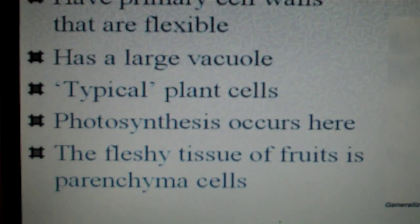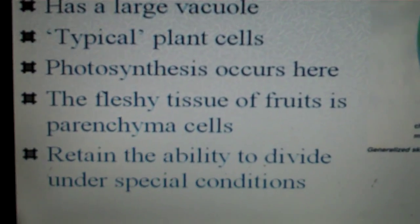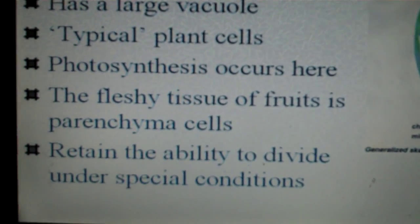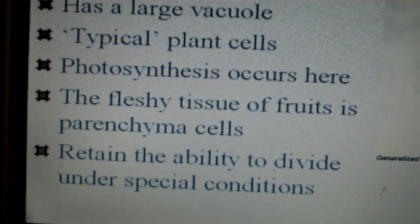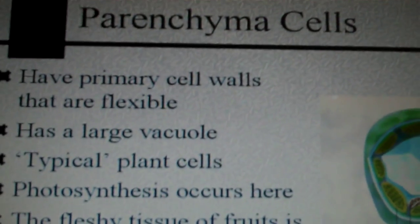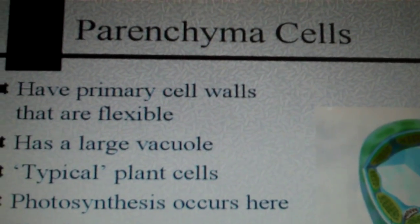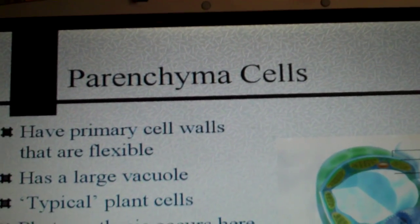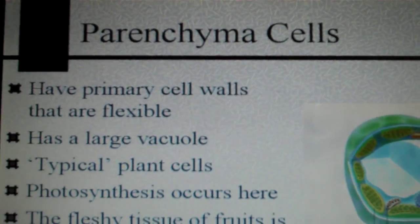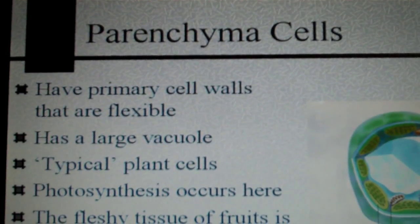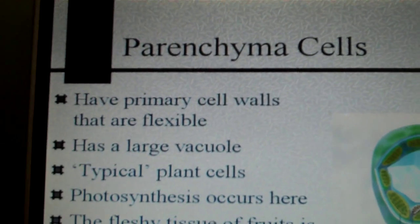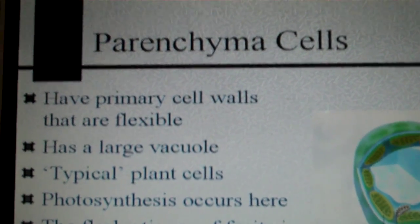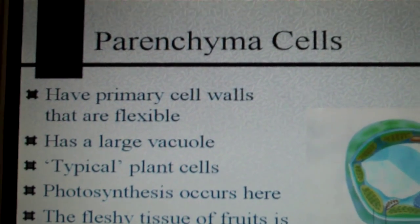The fleshy tissue of fruits is also parenchyma cells. And they retain the ability to divide under special conditions. Generally, parenchyma cells will not go through mitosis very often. However, they retain the ability, which means that if the plant is under stress or some of the plant has been removed, the parenchyma cells can undergo mitosis to help the plant continue its growth.